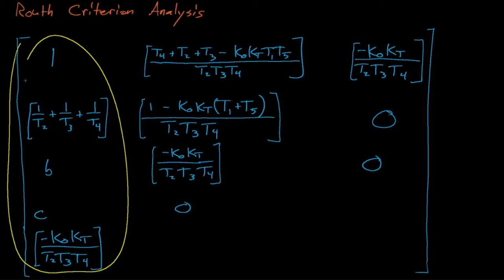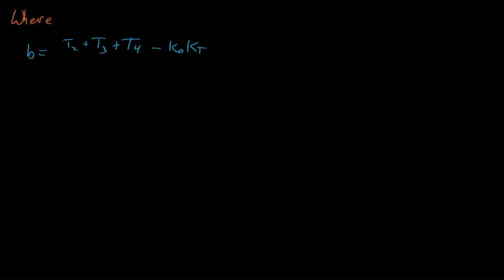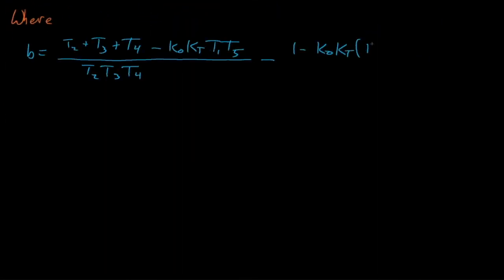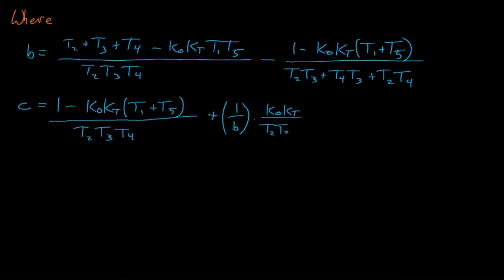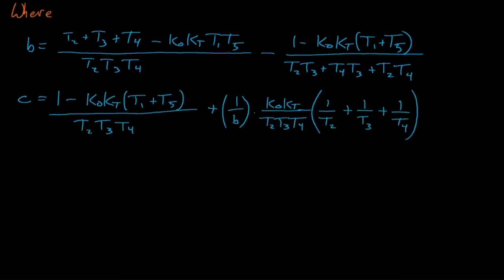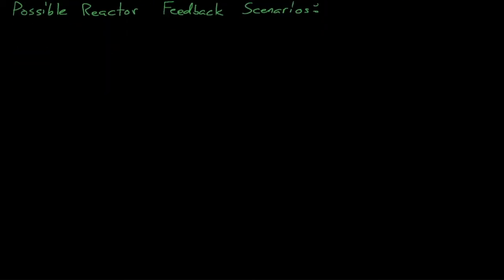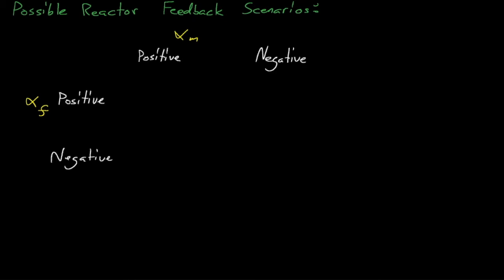In this left-hand-side column, we have b and c terms, where b is given by one expression and c is given by an even more complicated expression. So will these terms be positive? Let's consider four possible cases: either alpha_f is positive or negative, and either alpha_m is positive or negative.